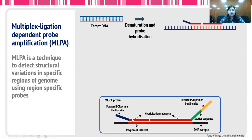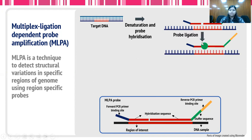The probe is designed with a hybridization sequence complementary to the region of interest. Along with the hybridization sequence, there is a forward PCR primer binding site on the left-hand probe and a reverse PCR primer binding site along with a stuffer sequence on the right-hand side probe. These probes are then allowed to hybridize to the denatured target DNA.